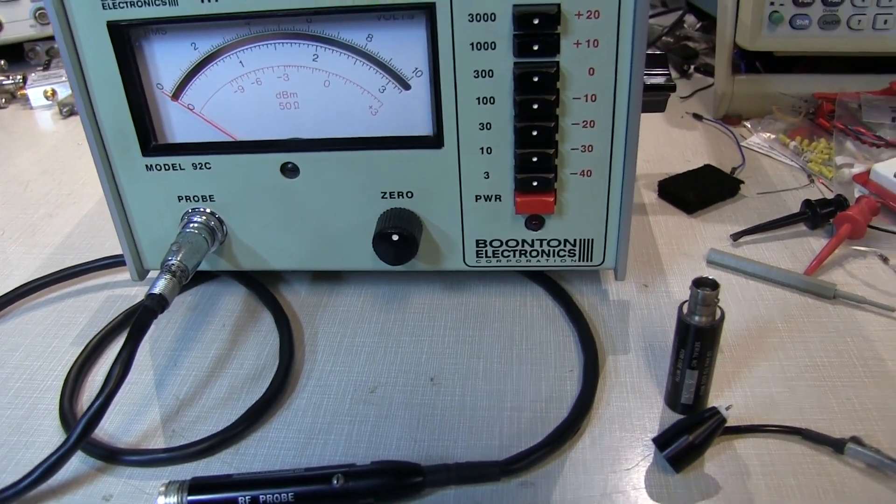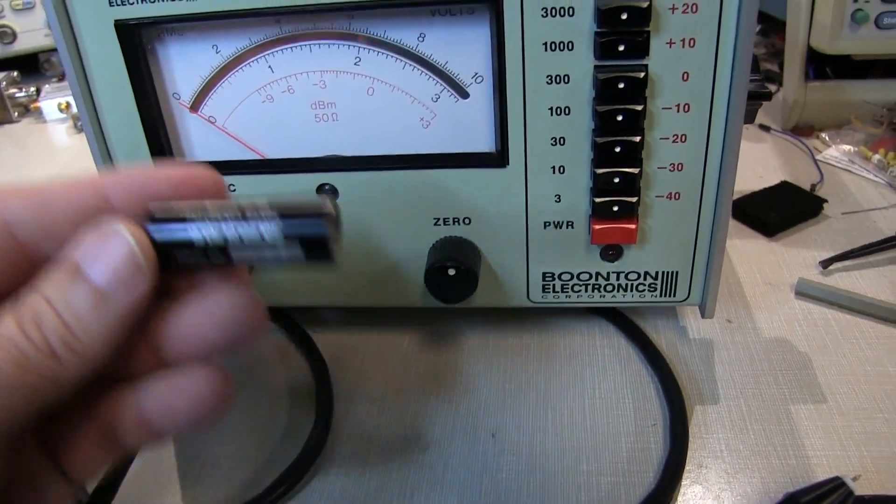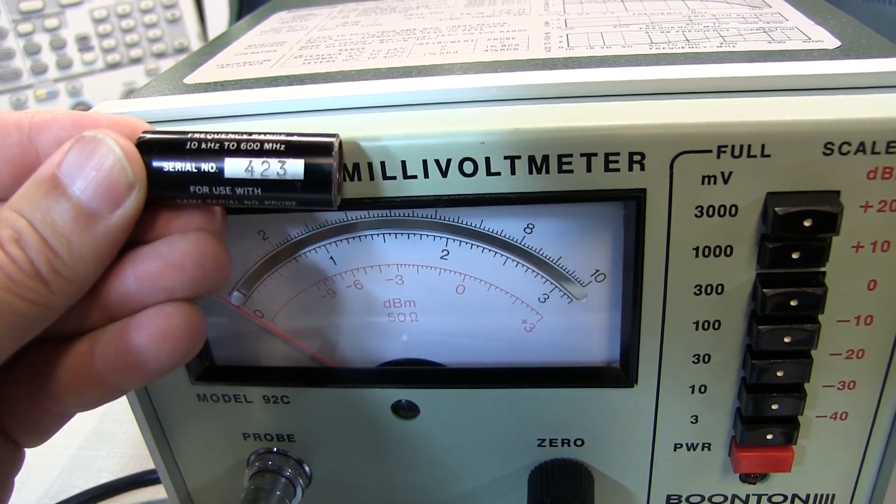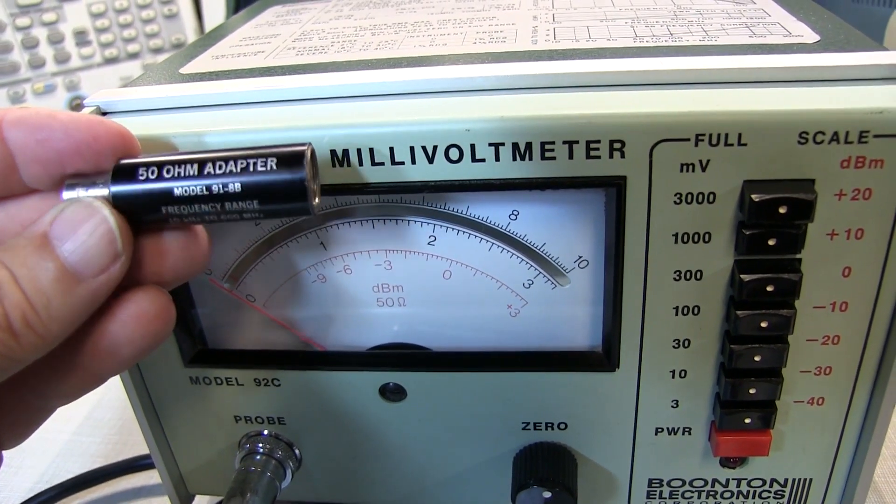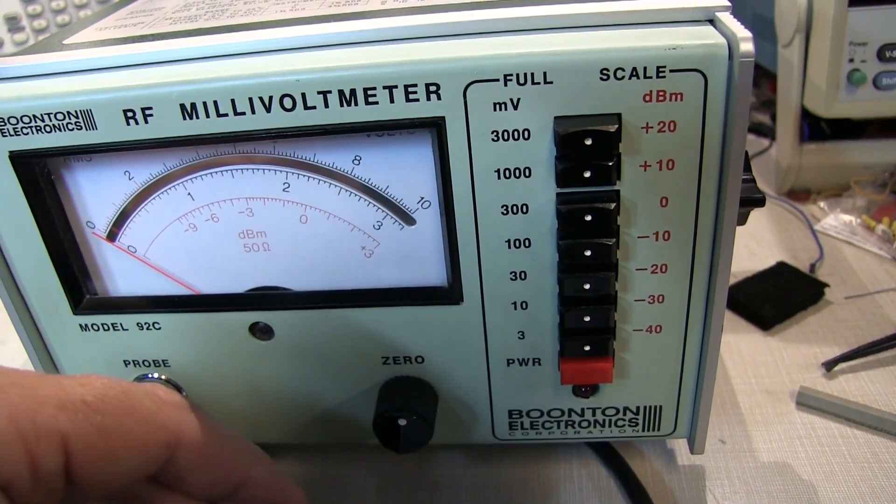In addition to that, the probe came with two additional accessories. There's a 50 ohm adapter here, and this 50 ohm adapter, again if we look, serial number 423. So this is the original 50 ohm adapter that came along with this meter when it was made and calibrated along with it.